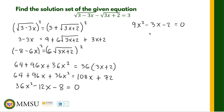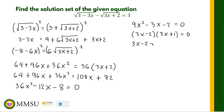We factor 9x squared minus 3x minus 2. The factors of 9x squared are 3x and 3x; the factors of negative 2 are negative 2 and 1. So the factored form is (3x minus 2)(3x plus 1). Check: negative 2 times 3 is negative 6, and 3 times 1 is positive 3; negative 6 plus 3 is negative 3, which matches the middle term. By the zero factor theorem, we get x equals 2/3 and x equals negative 1/3.